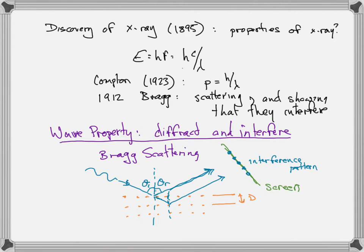The reason X-rays are particularly useful for scattering off of crystal planes — this Bragg scattering — is because X-rays are the right size to produce a visible interference pattern. Interference occurs most prominently when the wavelength of the light is similar to the distance D, the crystal plane spacing. When the wavelength approximately equals D, you get noticeable diffraction and noticeable interference.